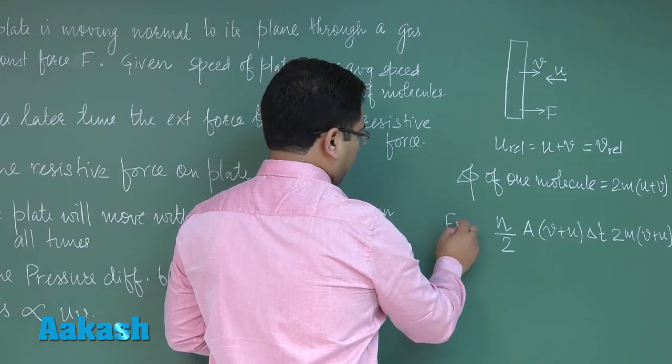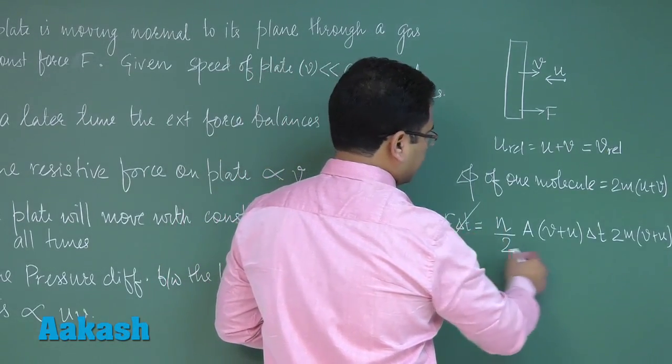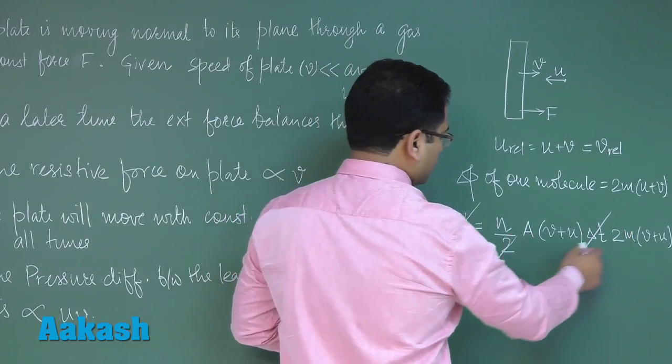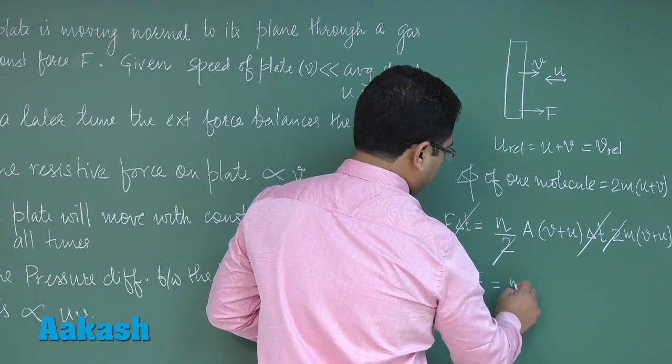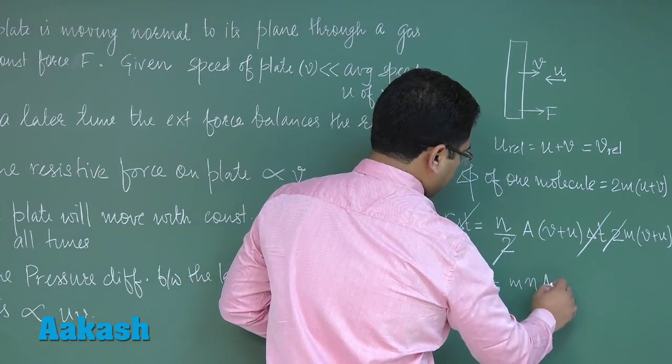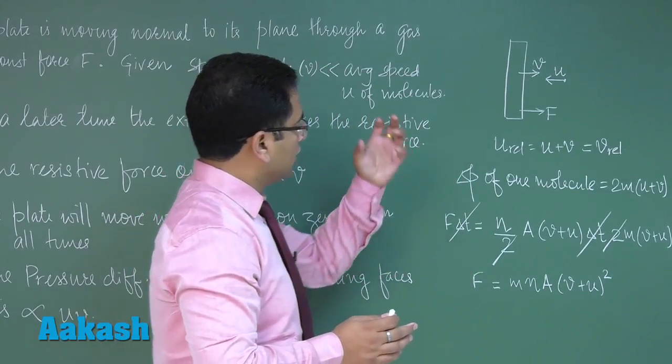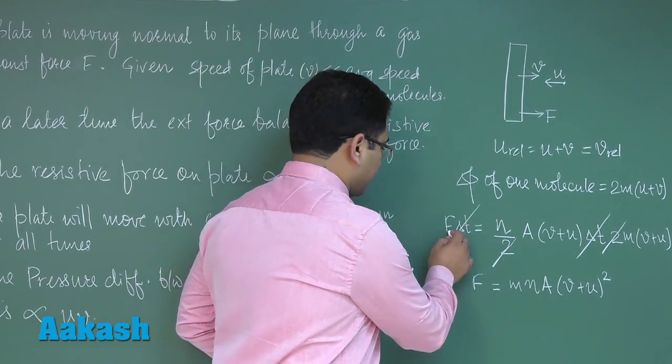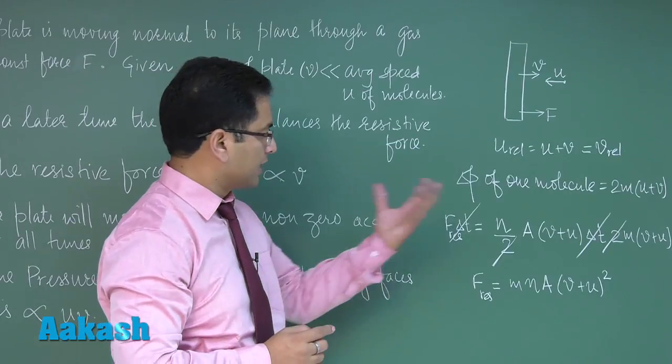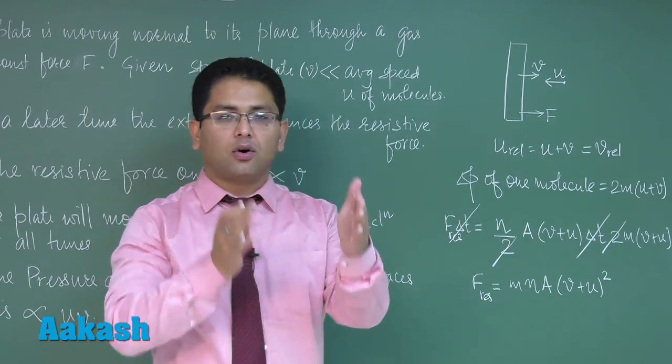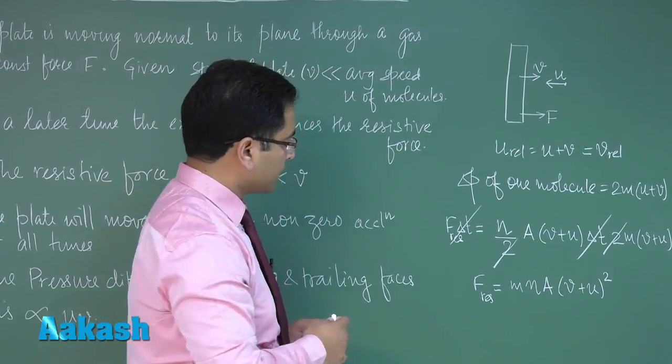And the change in momentum that would be 2m(V + U), so that of course would be F delta t. Now straightforward you can see this delta t would get cancelled, and this 2 and this 2 ka factor would also cancel out. So we'll be getting F equals to mnA(V + U) whole square. That is due to the collision at the front face. So more precisely this is F resistive, because F is already given for the external one. We have already said gas molecule and plate ke beech ke collision - that is the cause of the resistive force.